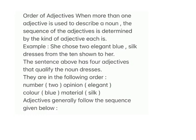Order of adjectives: When more than one adjective is used to describe a noun, the sequence of adjectives is determined by the kind of adjective each is. Example: 'She chose two elegant blue silk dresses from the ten shown to her.' This sentence has four adjectives qualifying the noun 'dresses,' in this order: number (two), opinion (elegant), color (blue), material (silk).